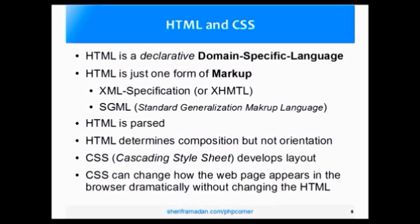These are things that we don't necessarily get directly from HTML. Even though there are attributes in HTML that in the past have been used to specify some orientation, really when we separated the content, or the composition of that content, from its presentation, from its layout, we came up with CSS — the Cascading Style Sheet — that allows us to tell the browser how to actually render these different HTML elements inside of your browser, so that we can keep the composition congruent within the tags and the way that we look at these different elements using CSS. CSS can actually dramatically change how your web page appears in the browser without actually changing any of the HTML.